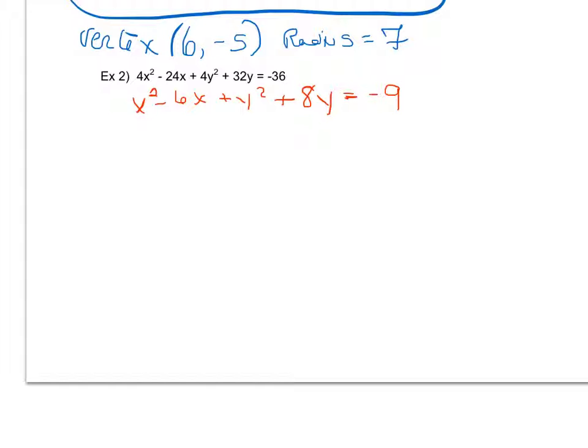And now I'm going to go ahead and I'm going to complete the square by taking my linear term for my x and dividing it by 2. And I'm going to square my result. I'm going to do the same thing with my linear term for my y's.